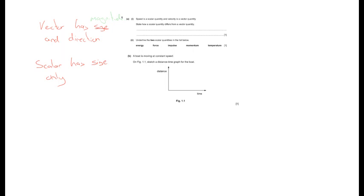Part two: underline the two scalar quantities in the list — energy, force, impulse, momentum, and temperature. We're looking for the ones that don't have a direction attached. Force, impulse, and momentum all do have directions, so the answer is energy and temperature.